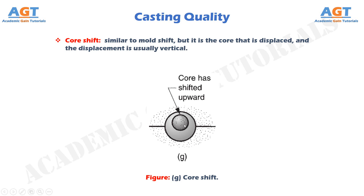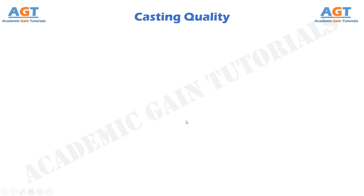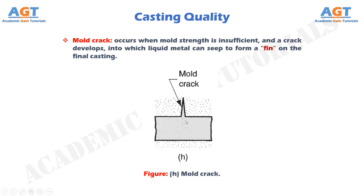Core shift and mold shift are caused by buoyancy of the molten metal. Mold crack occurs when mold strength is insufficient and a crack develops, into which liquid metal can seep to form a fin on the final casting.